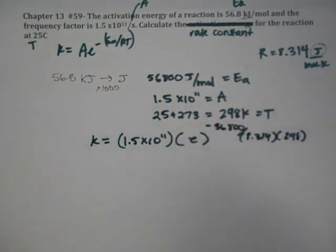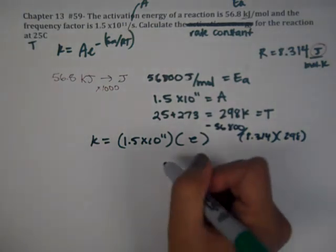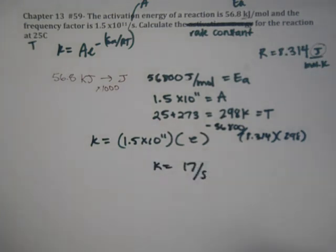to the negative 56,800 divided by 8.314 times 298. Let's make sure we put that in correctly. And when you solve it all out, you're going to get roughly K equals 17 inverse seconds.